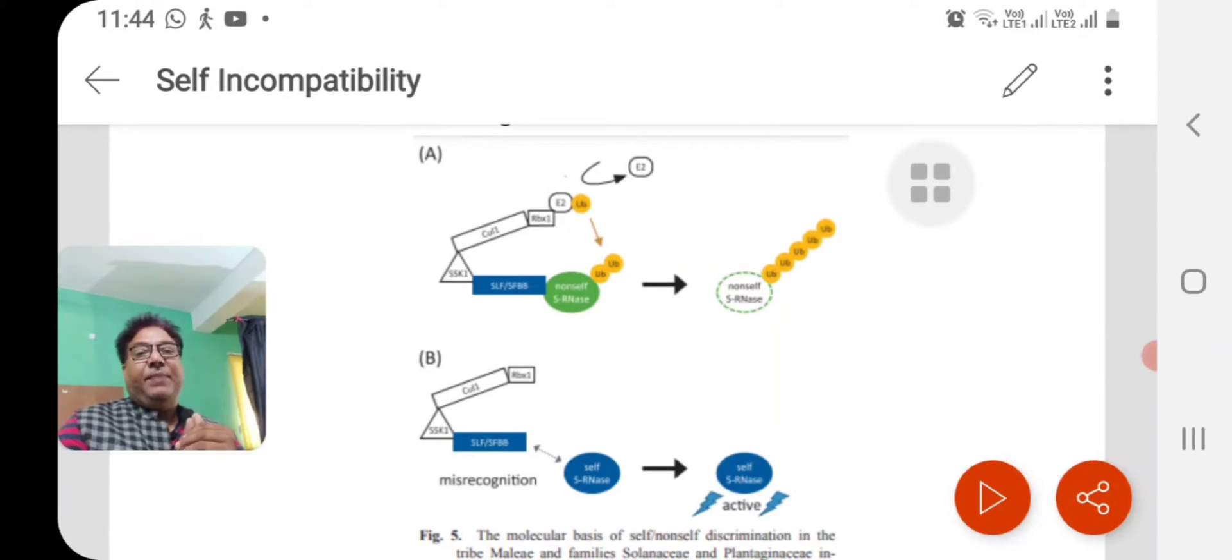Then what will be done is that the sRNA will be degraded by ubiquitinization and proteasomal degradation, by the F-box mediated ubiquitinization pathway. But where the pollen is similar, identical as far as the S allele is concerned, this degradation will not occur, and thus the sRNases will be able to degrade the rRNAs.